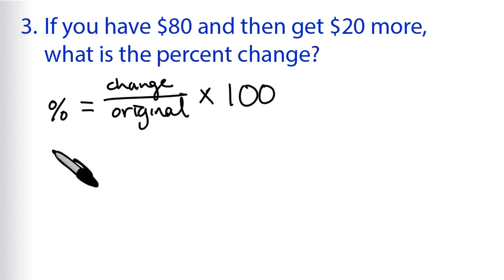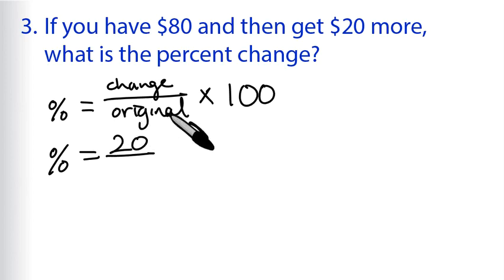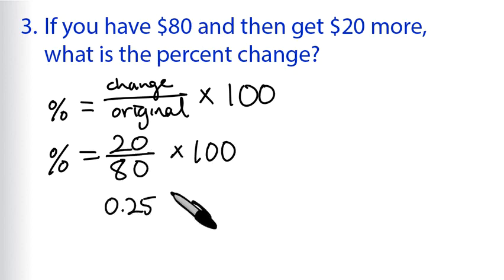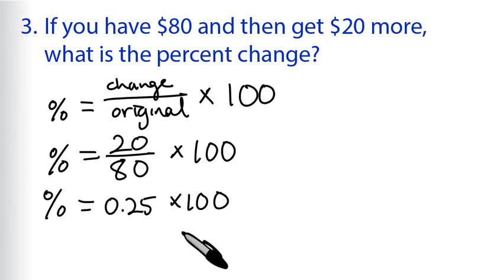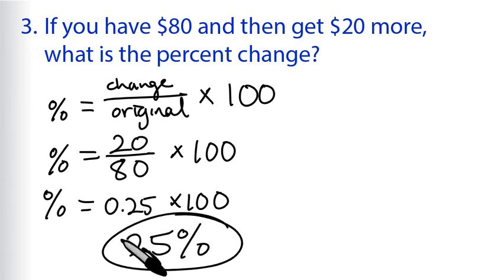Let's plug in our numbers. The percent change equals the absolute change, which is 20 — and it's 20 more, so it's positive. Divided by the original amount, which is 80, then multiplied by 100. So 20 divided by 80, or 2 divided by 8, equals 0.25. Times 100 gives us 25%. So the percent change equals positive 25% — a 25% increase.